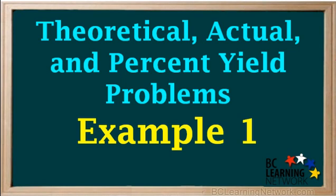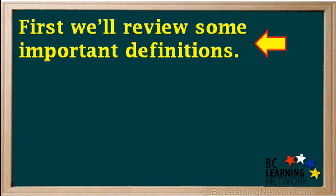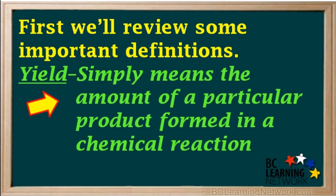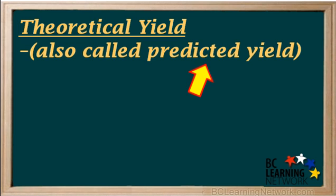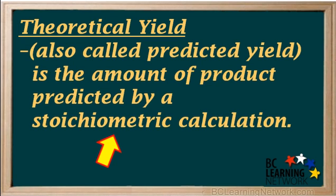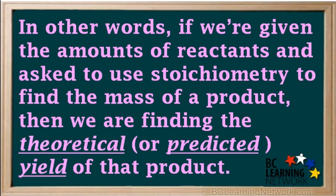Going through this example will help you understand theoretical, actual, and percent yield problems. First we'll review some important definitions. Yield simply means the amount of a particular product formed in a chemical reaction. Theoretical yield, also called predicted yield, is the amount of a product predicted by a stoichiometric calculation. In other words, if we're given the amounts of reactants and asked to use stoichiometry to find the mass of a product, then we are finding the theoretical or predicted yield of that product.